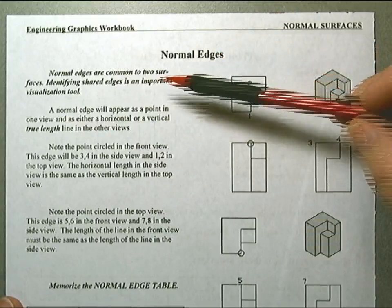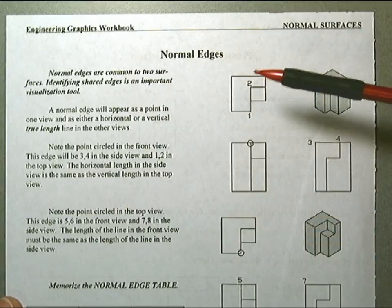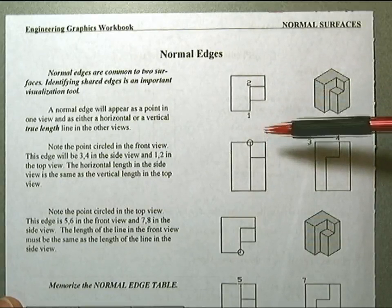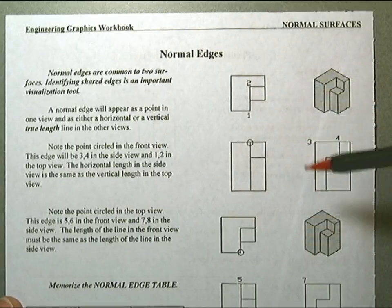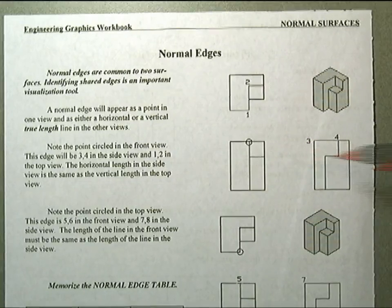Identifying these shared edges is an important visualization tool. A normal edge will appear as a point in one view and either a horizontal or vertical true length line in the other views.